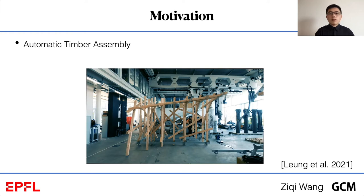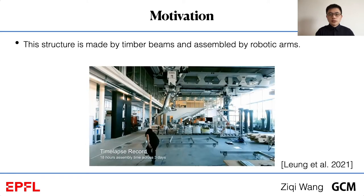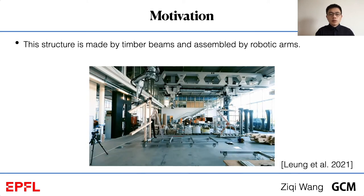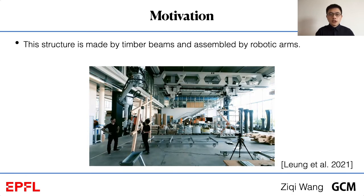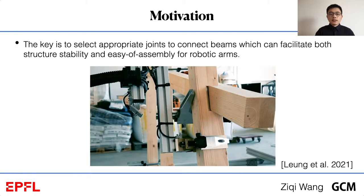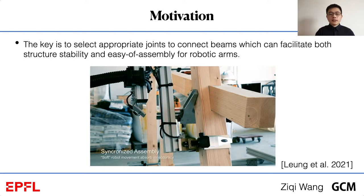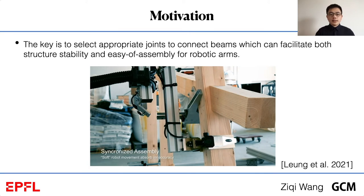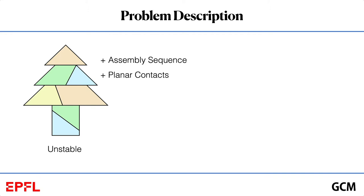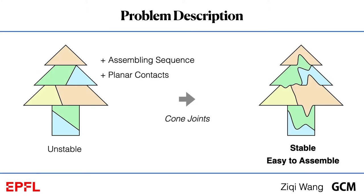This project is motivated by the recent development in digital fabrication. One typical project finished at ETH Zurich is about automatic timber assembly. Their goal is to use robotic arms to assist timber structure assembly. The structure needs to be stable and assemblable at every intermediate assembly stage as well as final stage. Interlocking joints are used to connect adjacent beams to provide structure stability. Assembling beams connected with tight single-direction joints is difficult and requires high assembly precision. Currently, the structure design and assembly planning still requires a huge amount of human work. Therefore, given an unstable assembly with planning contacts and assembly sequence, we propose a computational method utilizing cone joints to make the optimized assembly stable and easy to assemble.